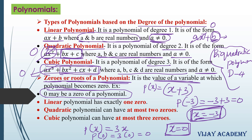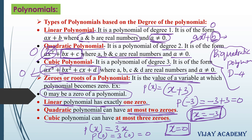For a linear polynomial, there is exactly one zero. A quadratic polynomial can have at most two zeros — meaning maximum two zeros: it can have two, one, or no zeros. A cubic polynomial can have at most three zeros: it can have three, two, one, or no zeros.